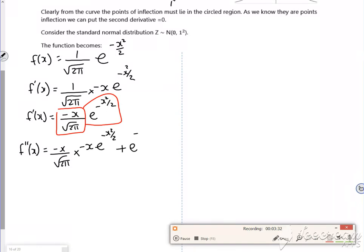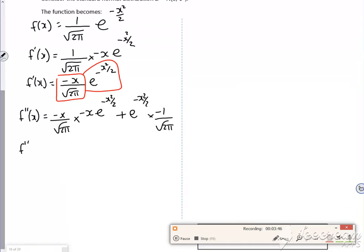Plus the second bit times by the first bit differentiated. So the minus and the root 2π are all constants, the x differentiates to just minus 1 over root 2π. So let's have a look what f''(x) is.